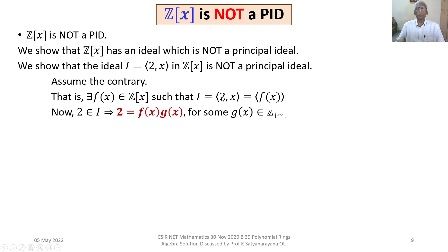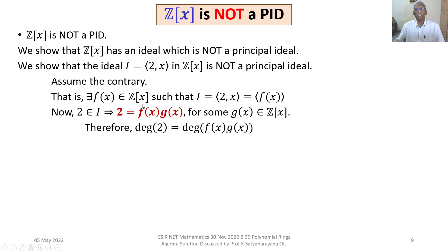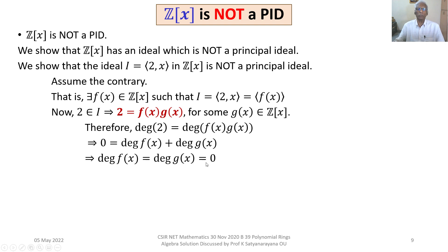Since 2 belongs to I, 2 is an element of (F(X)), meaning 2 is a multiple of F(X). So there exists G(X) in Z[X] such that 2 = F(X)·G(X). Taking degrees on both sides: deg(F(X)·G(X)) = deg(F(X)) + deg(G(X)) = deg(2) = 0. Since degrees are non-negative integers, this implies deg(F(X)) = deg(G(X)) = 0. Therefore F(X) and G(X) are constant polynomials.